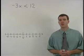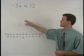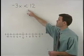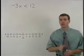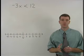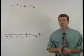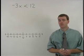When you're asked to solve an inequality like negative 3x is less than 12, your goal should be the same as it was when solving equations: to get x by itself on one side.